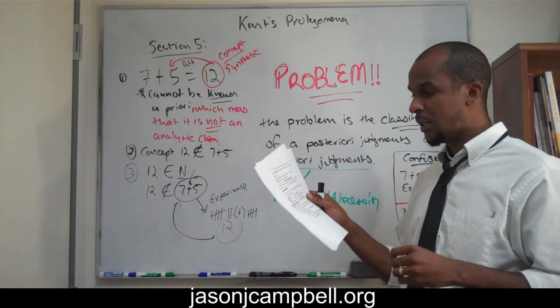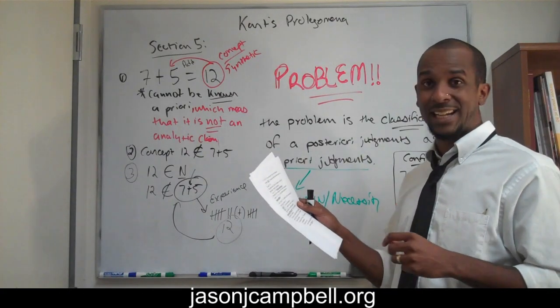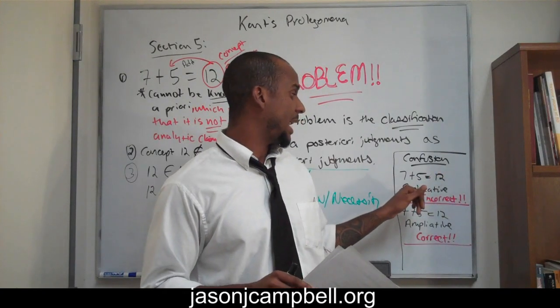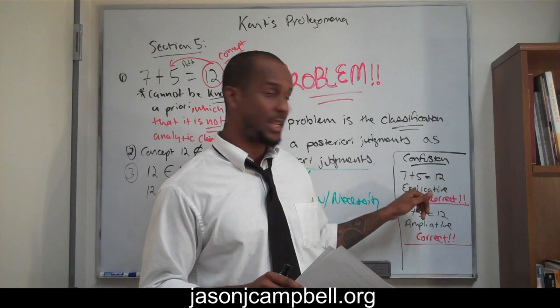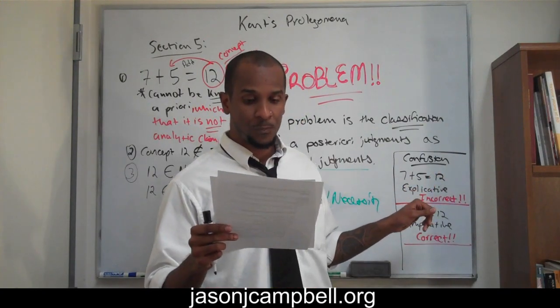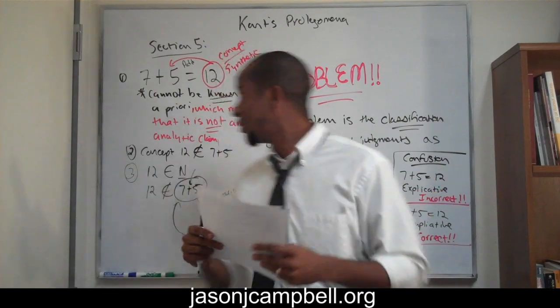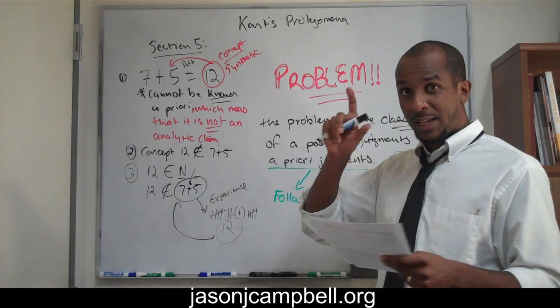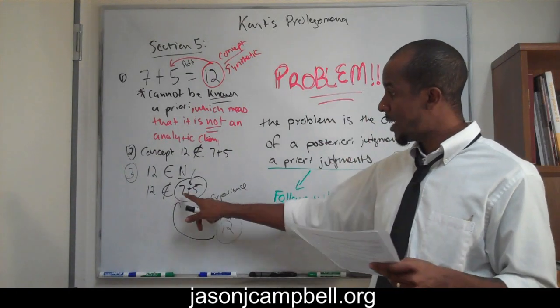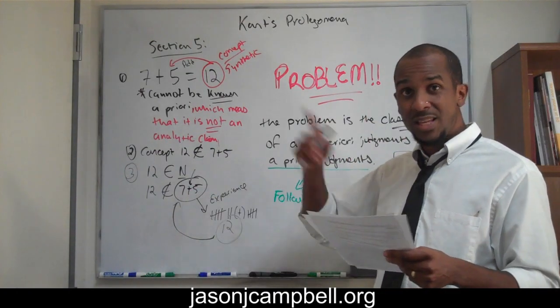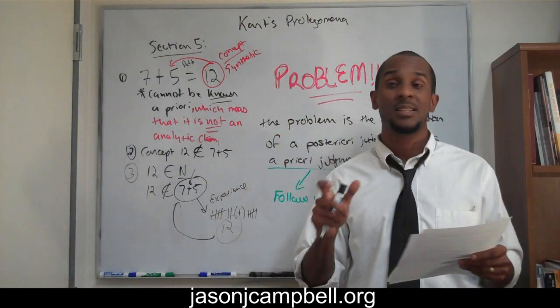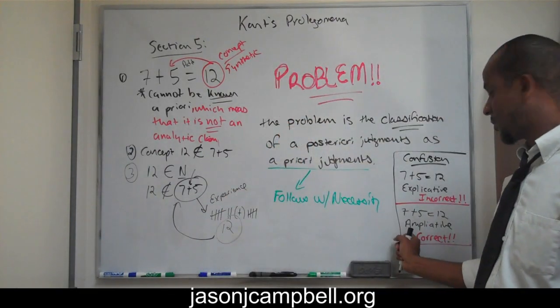So what's false? 7 plus 5 equals 12 is an analytic, thus explicative is incorrect. It's false. What's true? The sum of 7 plus 5 combined with the synthesis of the concept 7 and 5 within the intuition equaling 12 as a synthetic judgment, that is correct, that is true.